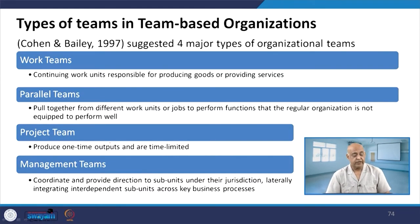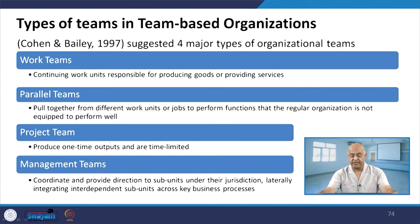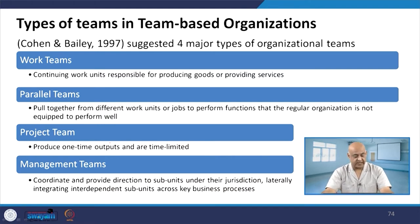According to Cohen and Bell in 1997, there are four major types of organizational teams: continuing work units responsible for producing goods or providing services; parallel teams pulled together from different work units to perform functions the regular organization is not equipped to perform well; project teams that produce one-time, limited outputs; and management teams that coordinate and provide direction to subunits and laterally integrate independent subunits across key business processes.